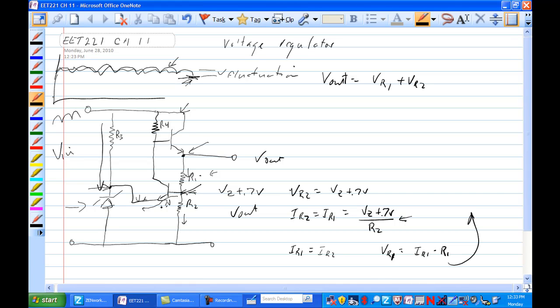Well, what happens to that extra current that goes through here if the voltage at this point, at the emitter of Q1, increases? If that increases, the current through here increases. The current through here and through the Zener would increase.